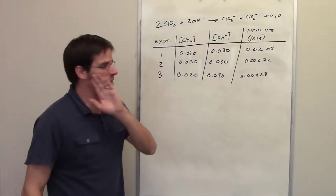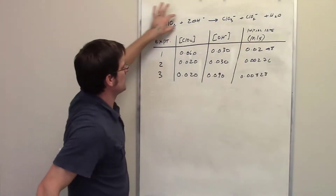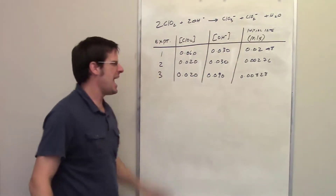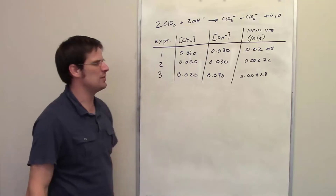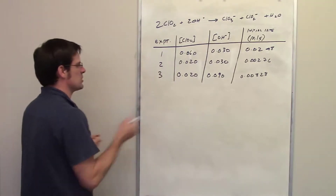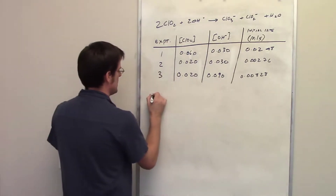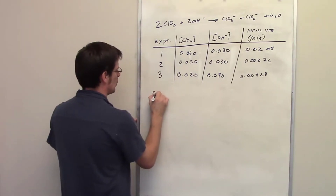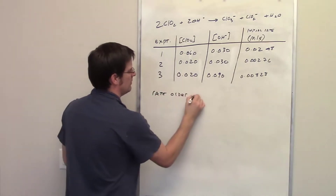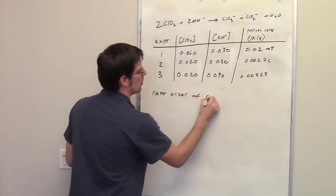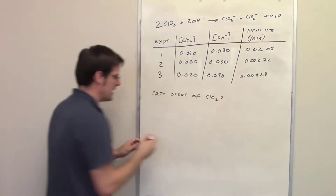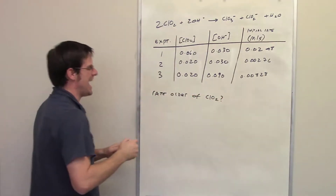In this question, we're given this big, complicated-looking reaction and this table of data. We're asked to determine the rate order of chlorine dioxide, that is, component A.